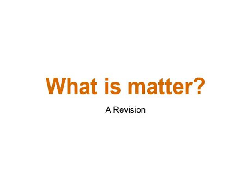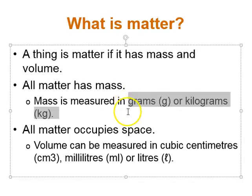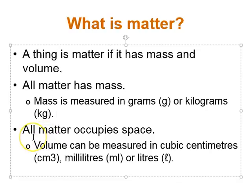Before we answer, let's revise what matter is. Matter is anything that occupies space and has mass. So a thing is matter if it has mass and it occupies space. All matter has mass, which means matter can be measured in grams or kilograms or any other unit of measurement. As long as something's mass can be measured, there's a high chance it is matter — but it also has to satisfy the second criteria.